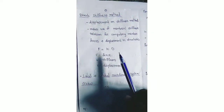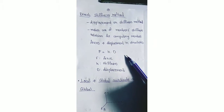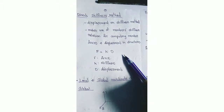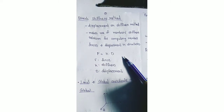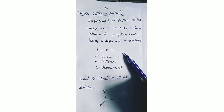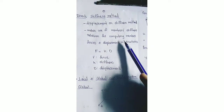This method uses stiffness to calculate unknown displacements. Stiffness is the property of a member — how stiff a member is, expressed by the parameter called stiffness. As this is a displacement method, the unknowns will be displacements. We find these unknown displacements, and with the calculated displacement and stiffness, we will be able to find the member forces.